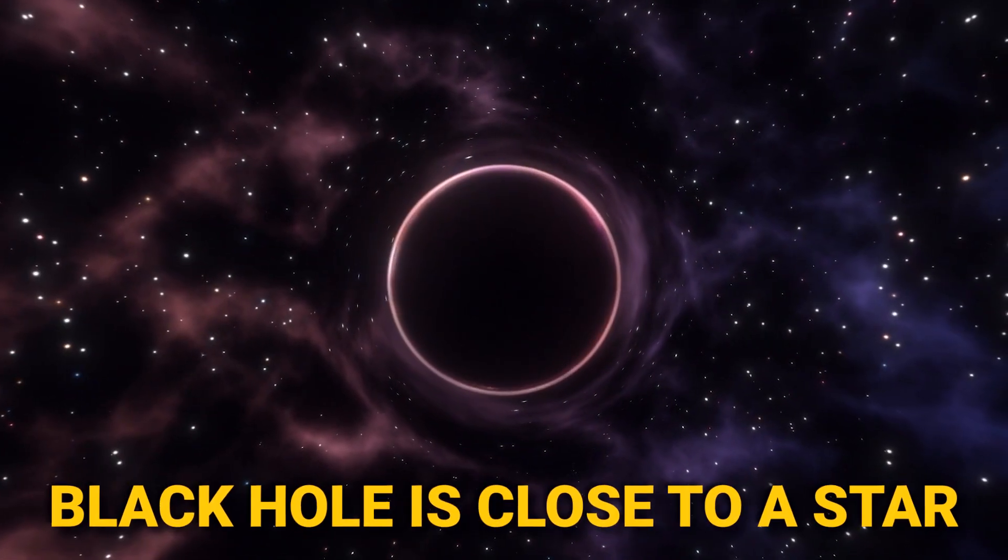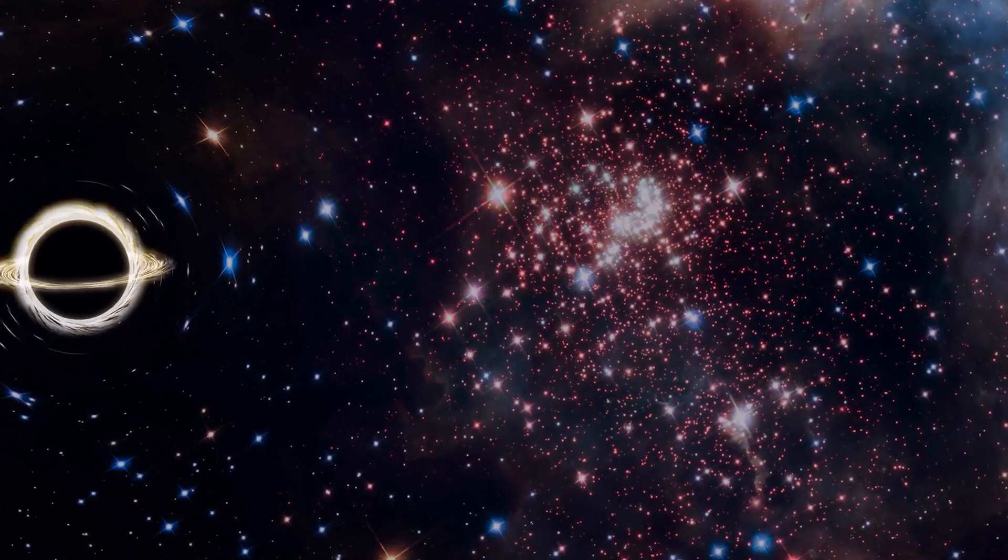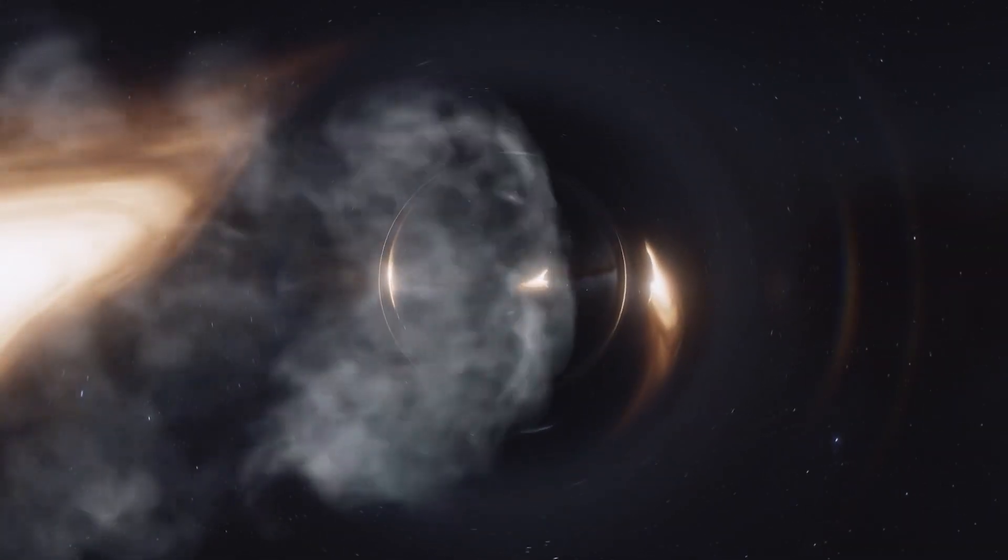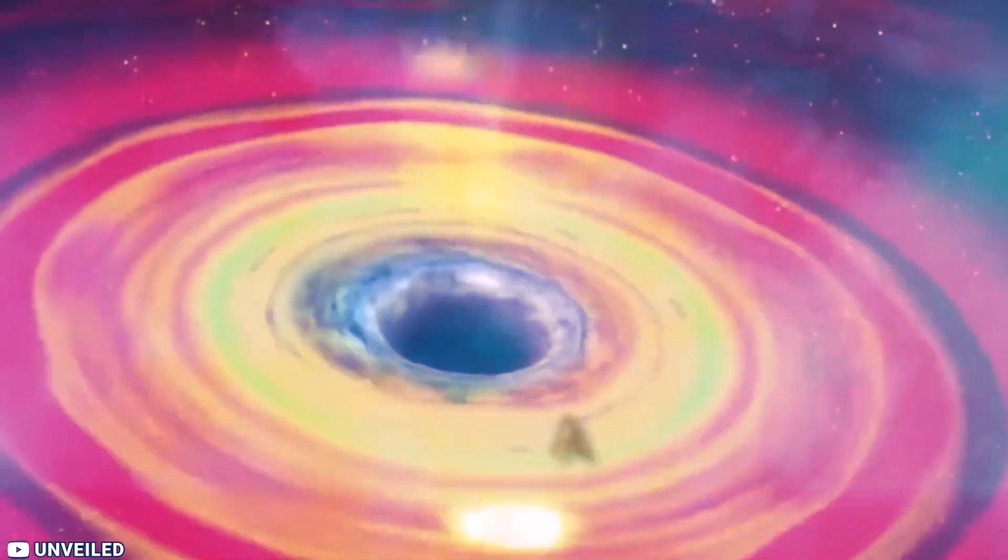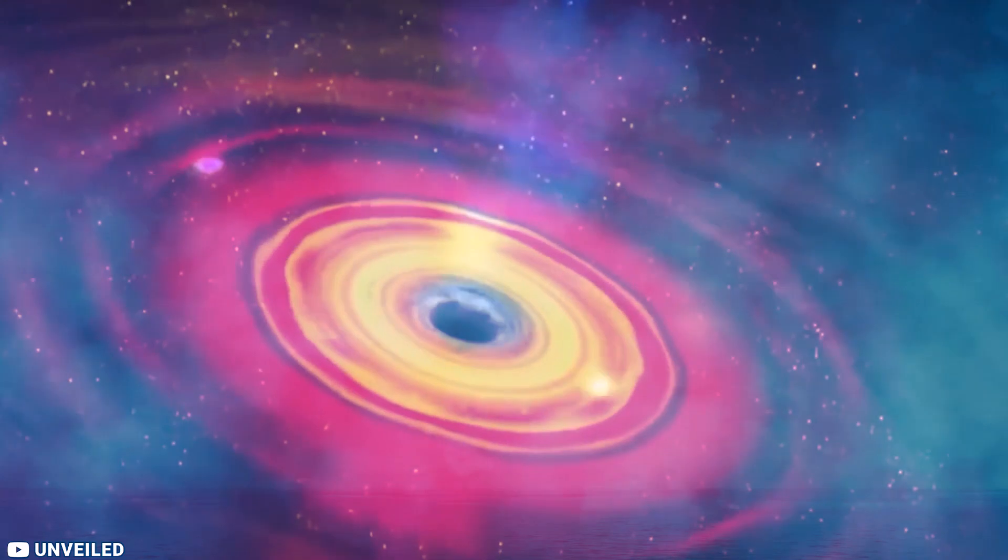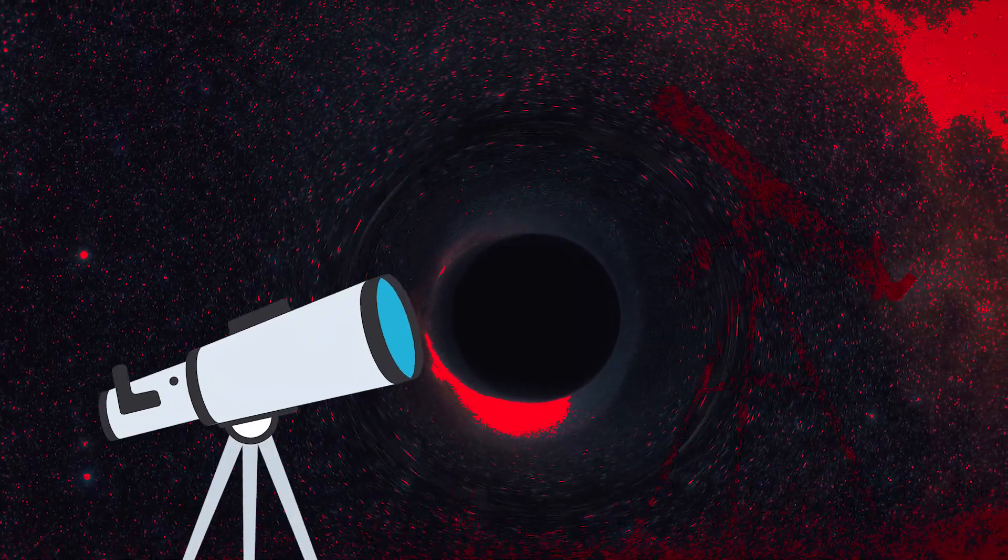For example, if a black hole is close to a star, it will pull the star's gas towards it. This gas will form a swirling disk around the black hole, called an accretion disk. The gas in the accretion disk will heat up and glow, making the black hole visible to telescopes.